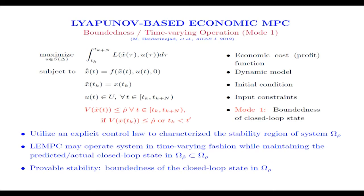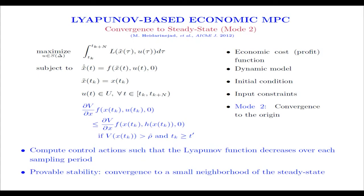Just to review an EMPC, more specifically Lyapunov-based EMPC, it's a two-mode controller paradigm. In the first mode of operation, we're allowed to operate the system in a dynamic fashion while operation is maintained in this subset of the stability region omega rho hat. We enforce that the predicted state be within that subset of the stability region. Under this mode of operation, the provable stability is boundedness in omega rho, our stability region. Under the second mode of operation, we enforce that the Lyapunov function decrease by at least the rate given by our explicit feedback controller. This ensures convergence to a small neighborhood of the steady state. This is for time-invariant cost functions.